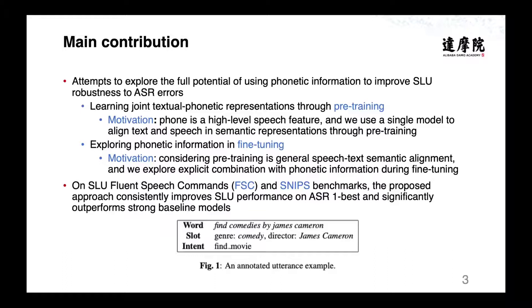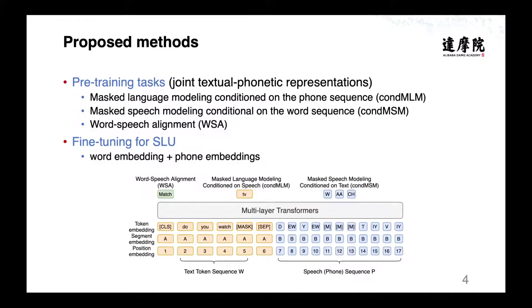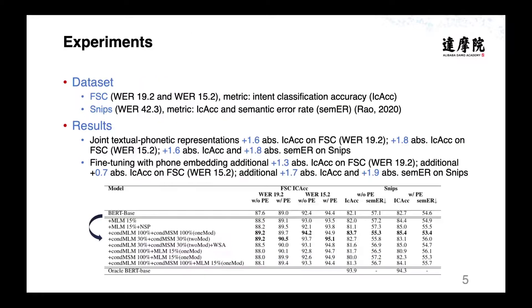On the benchmark, the proposed approach improved the SLU performance on ASR 1-best significantly, outperforming strong baselines. The proposed model joins textual and phone representations in an ad-fusion way. During fine-tuning, we explore the combination of improved word embedding and cross-modal phone embedding. In experiments, we obtained significant improvements from the joint text and phone representation and fine-tuning with phone embedding.